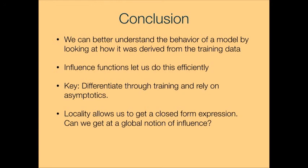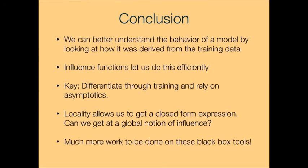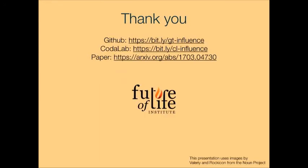There are many open questions, for example can we get at a more global notion of influence? We are looking at a marginal form of influence — can you ask questions like how does a whole subset of the training data affect the model? That might be quite hard with our techniques because our method assumes the model doesn't change too much with a small perturbation. In general, much more work needs to be done on tools that can let us figure out what an arbitrary black box model is doing. Thank you very much. The code and reproducible scripts for the experiments in our paper are uploaded online — please feel free to refer to those if you want more details, and I'm happy to take questions offline.